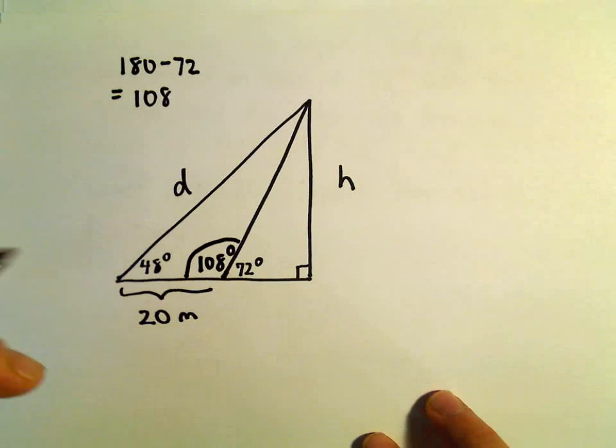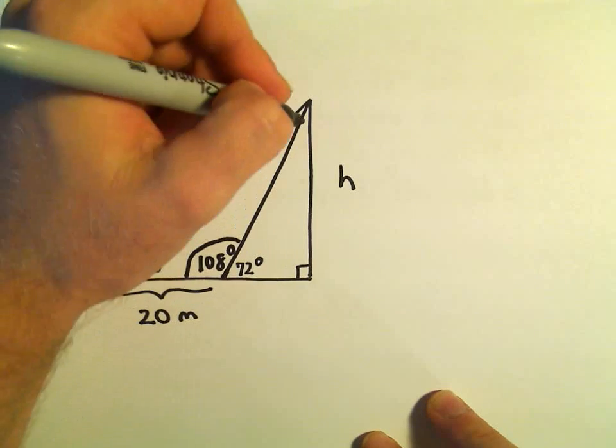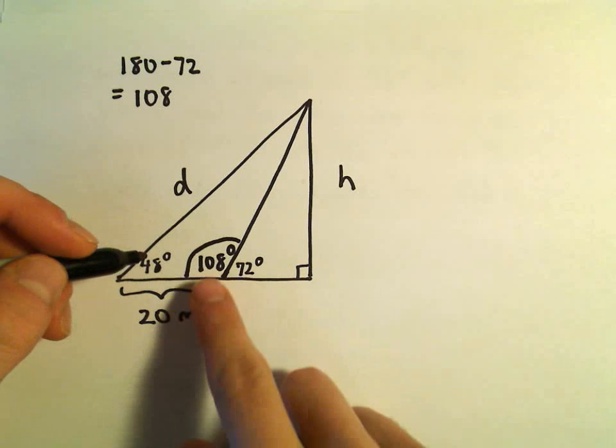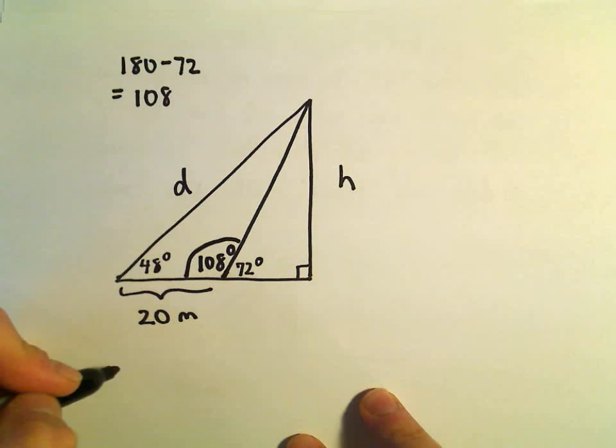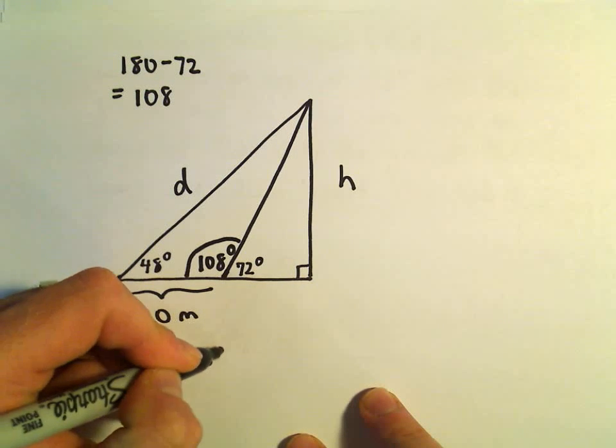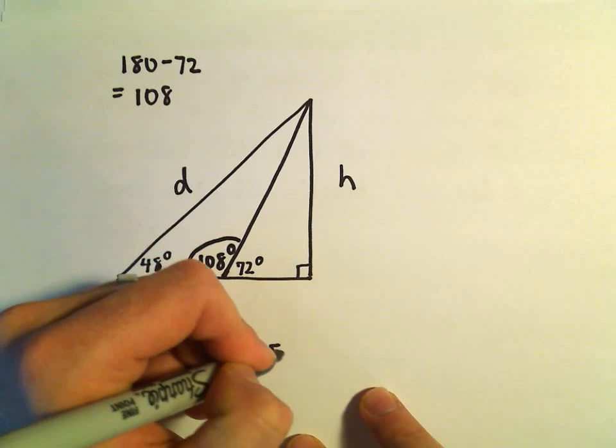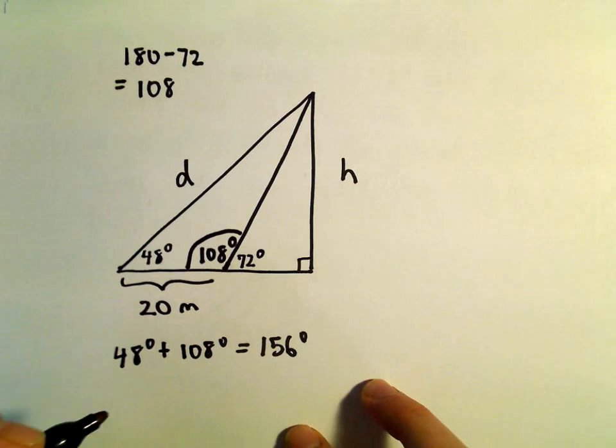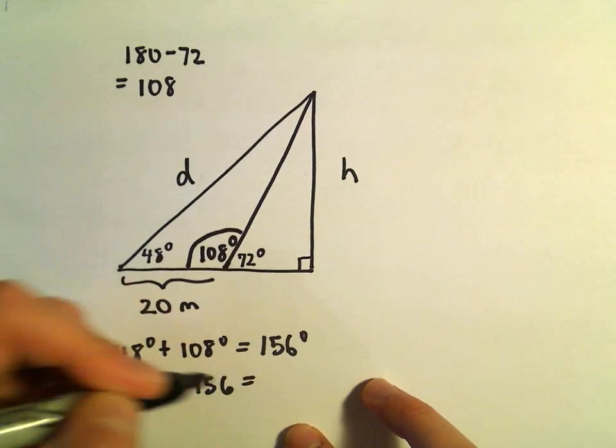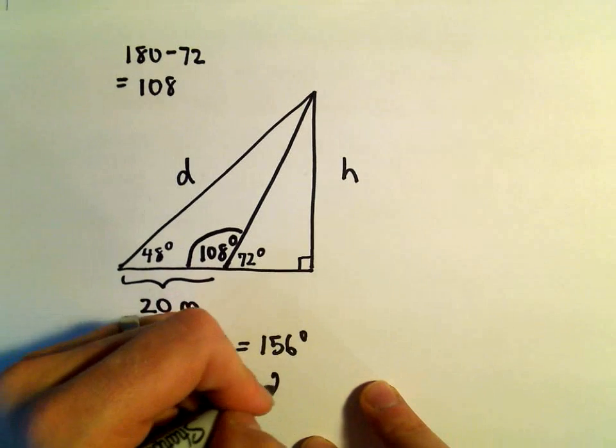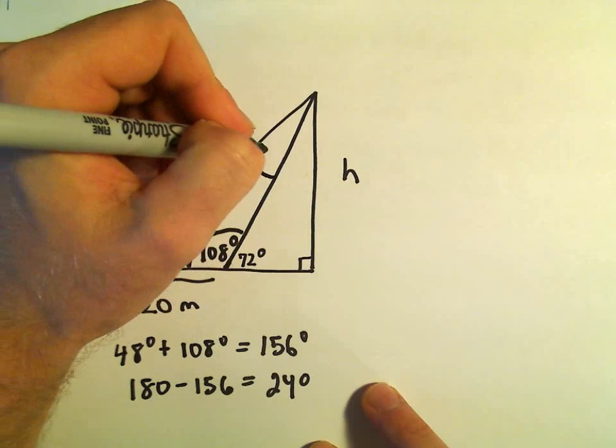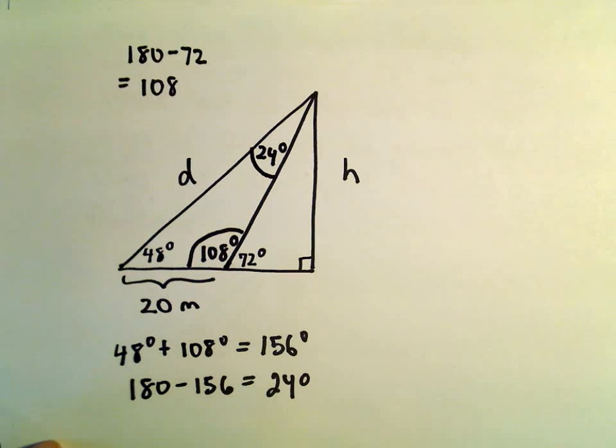Well, if you think about the triangle on the left, again, we know the angles inside of a triangle add up to 180. So if we take 48 degrees plus 108 degrees, that's going to give us 156 degrees. And if we take 180 and subtract away 156, I believe that's going to leave us with 24 degrees. So I know that this angle up here would simply be 24 degrees.